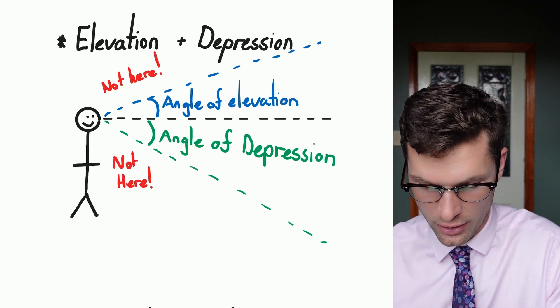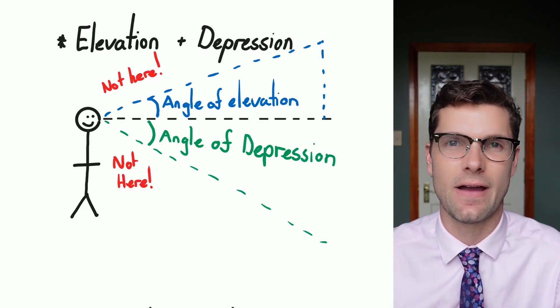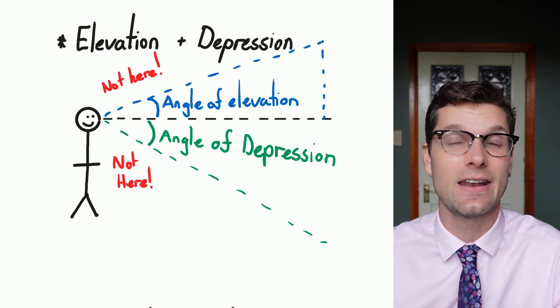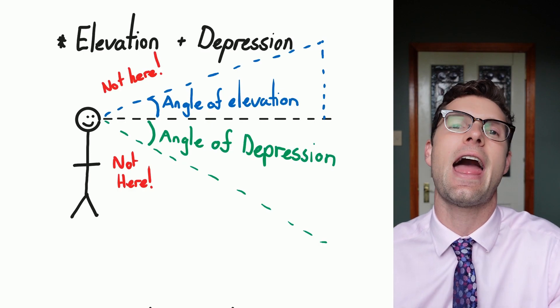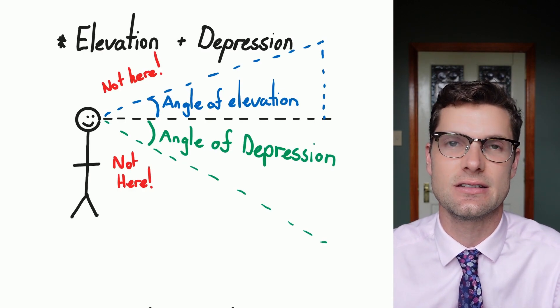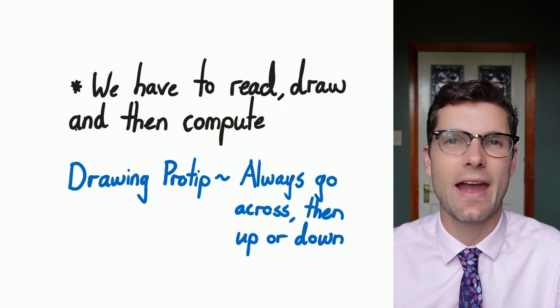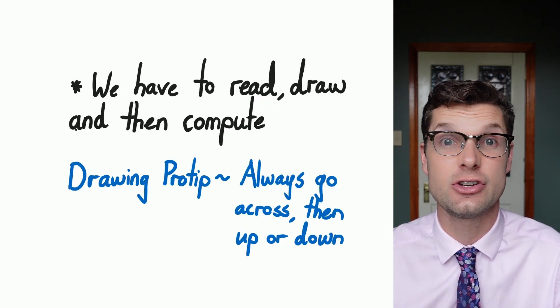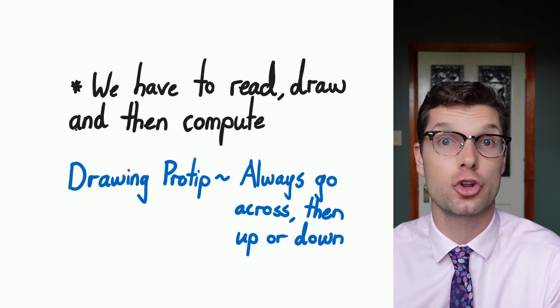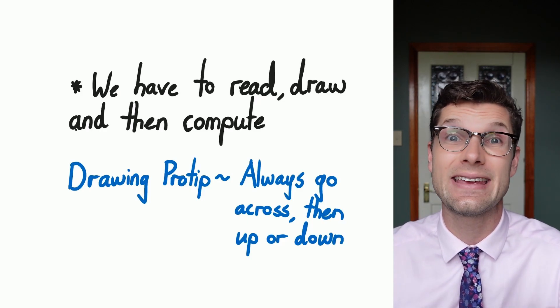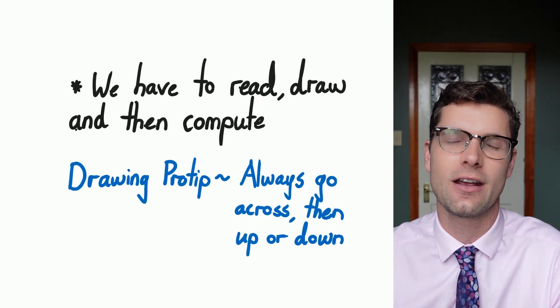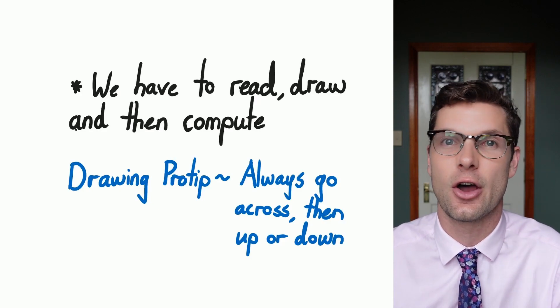If I put that on there for the angle of elevation, we can see that the right angle triangle has been formed from an imaginary line and then up some distance. So in order to get these questions right, we only have to do three things: interpret the question, read it, draw it, and then do the maths at the end. You'll usually get a mark for the drawing, so that's a really important part of this whole process.